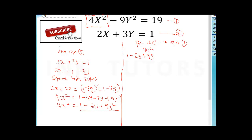In short, I had 4x² - 9y² = 19. So I'm going to replace 4x² with 1 - 6y + 9y² minus 9y² = 19. So 9y² minus 9y² will give us zero. This will now bring us down to 1 - 6y = 19.